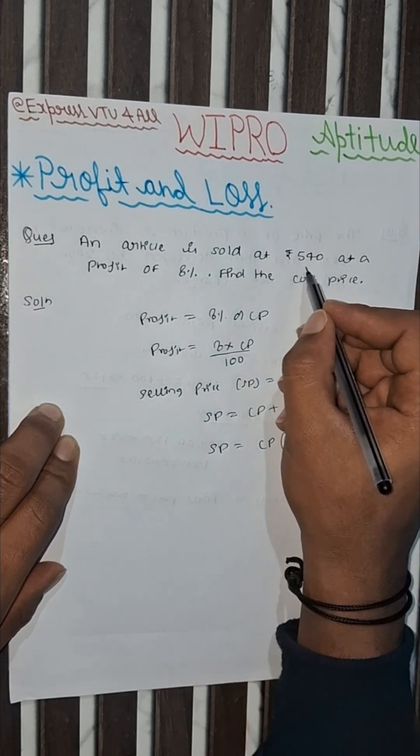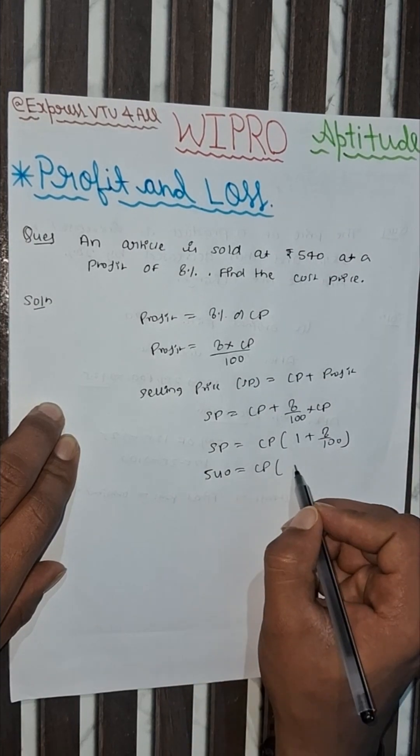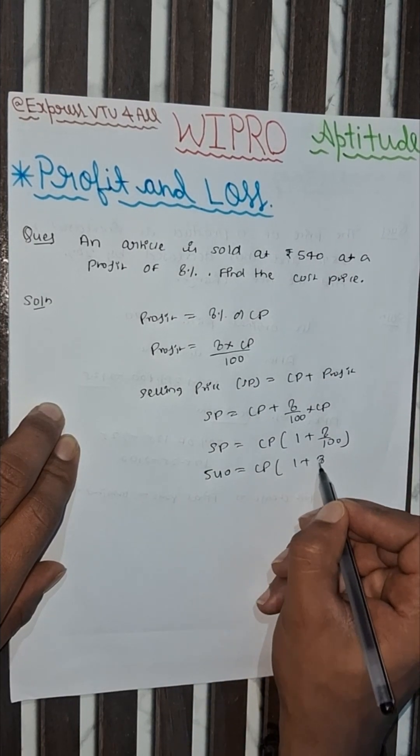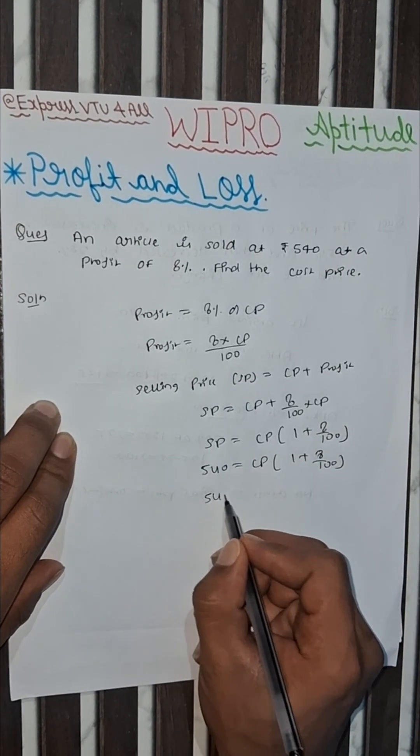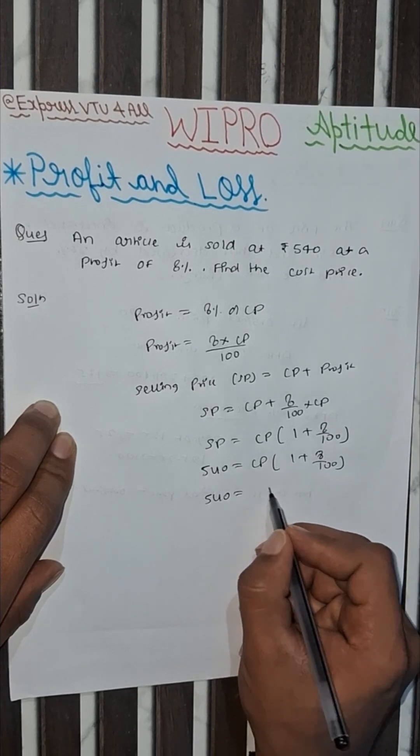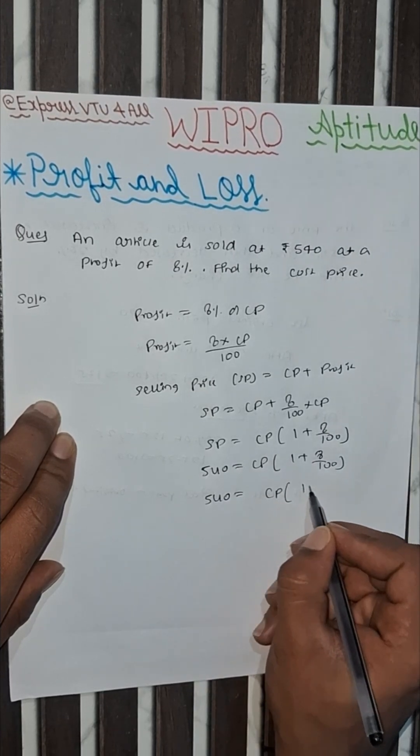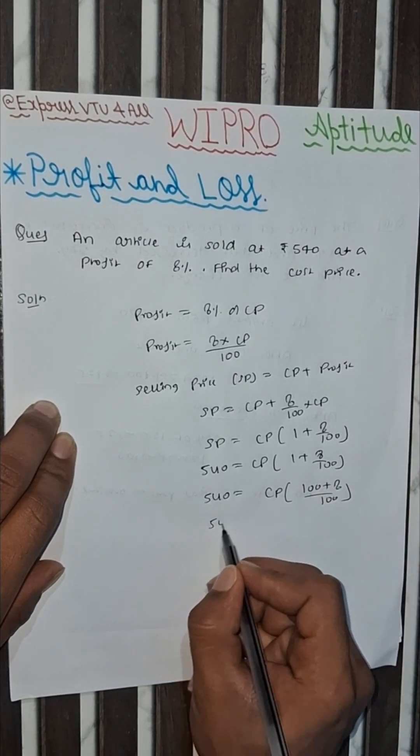The selling price is 540. So 540 equals CP into 1 plus 8 by 100. Taking the LCM, it becomes CP into 100 plus 8 by 100. So 540 equals CP into 108 by 100.